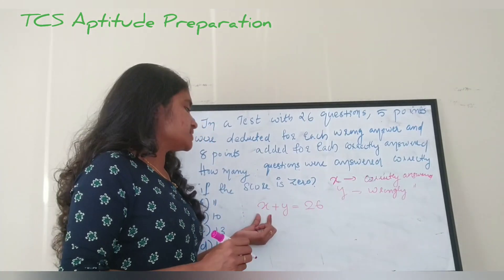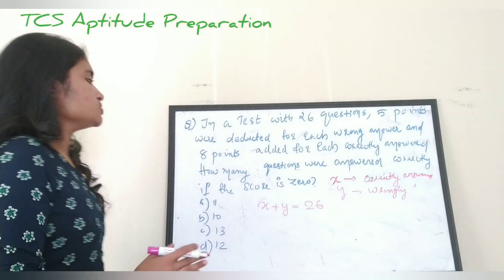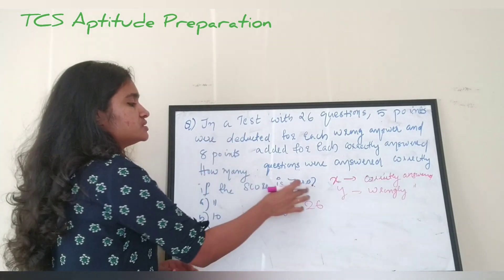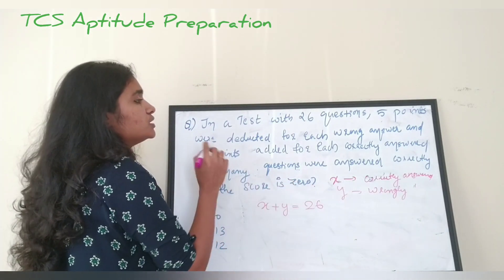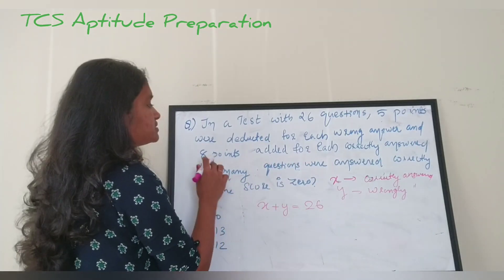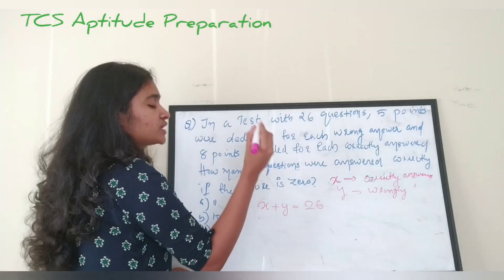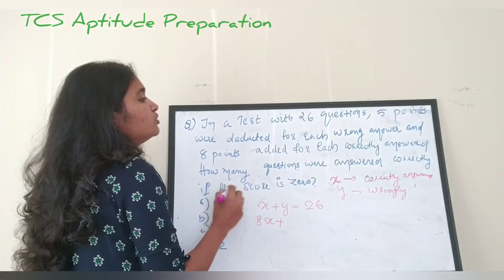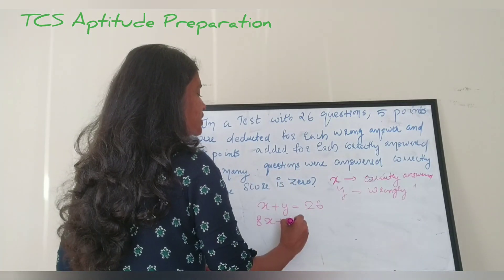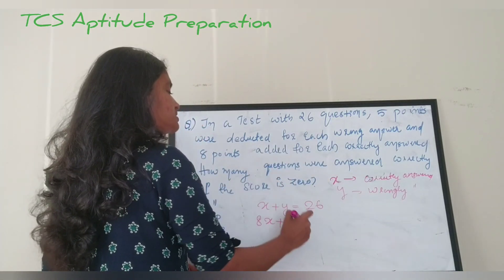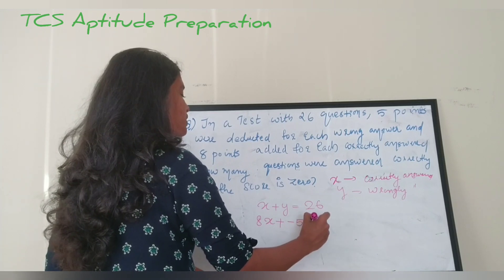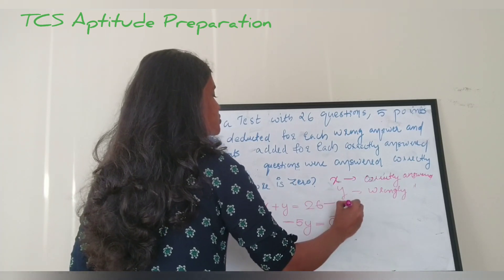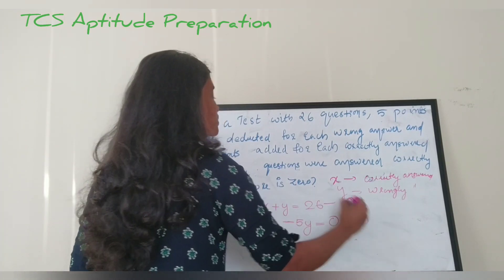Another condition is that the marks obtained is zero. So if x is correctly answered, eight points are added for each — that is 8x. Five points are deducted for each wrong answer — that is minus 5y. So 8x minus 5y equals zero. These are the two equations: equation one is x plus y equals 26, and equation two is 8x minus 5y equals 0.